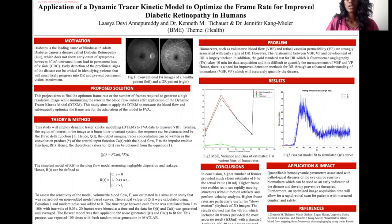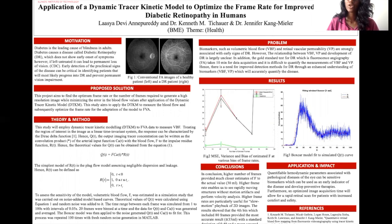However, the relationship between the volumetric blood flow, retinal vascular permeability, and the progression of diabetic retinopathy is largely unclear. In addition to that, fluorescein video angiography takes about 10 minutes for data acquisition and cannot quantify these biomarkers, especially at the capillary level where diabetic retinopathy is extremely relevant. Hence, there's a need for improved detection methods of diabetic retinopathy with better understanding of these early biomarkers — volumetric blood flow and vascular permeability — that can help accurately quantify this disease.